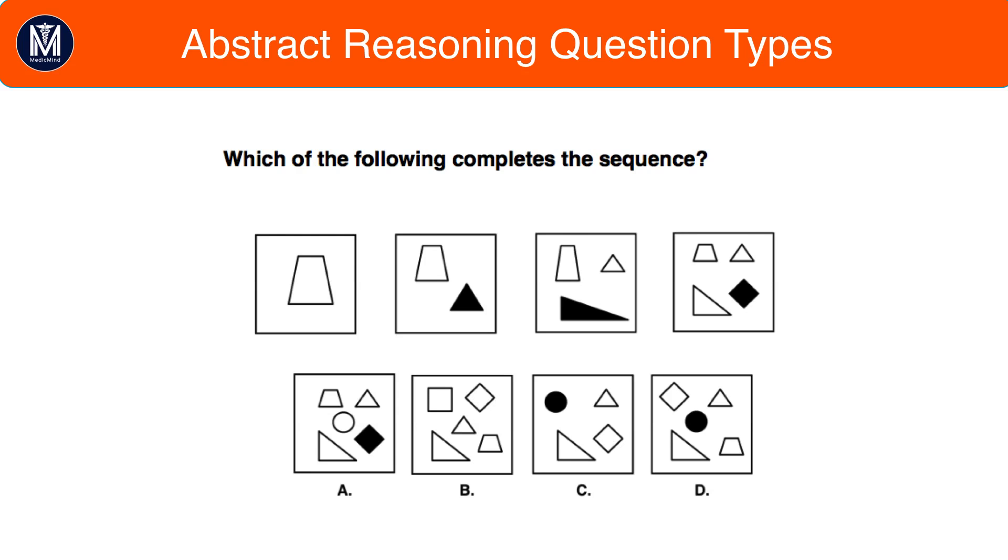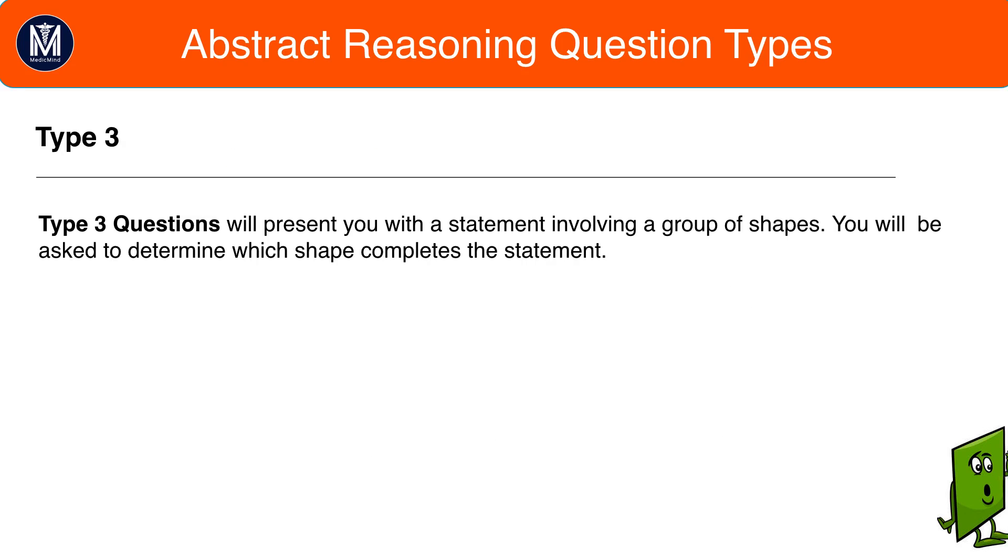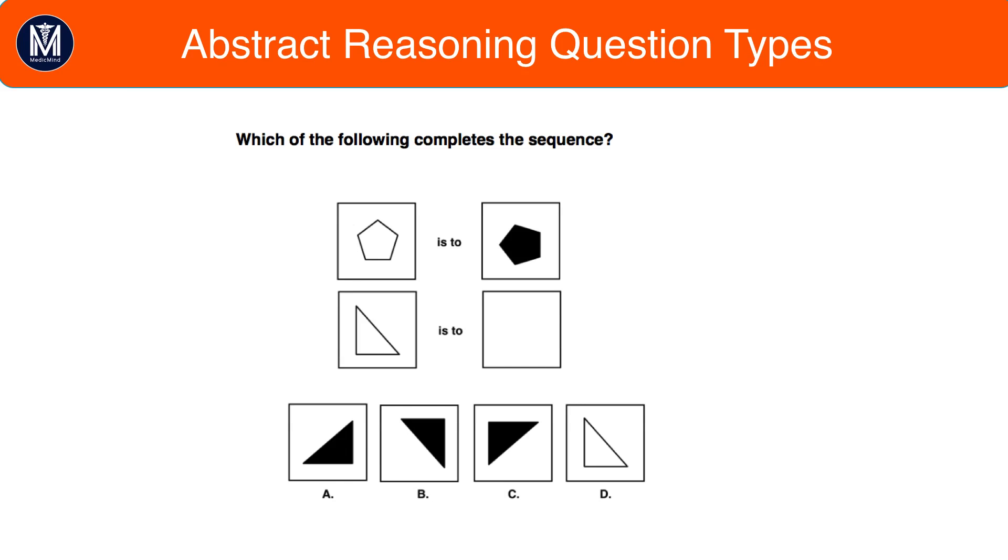Type 3 questions. In type 3 questions, you get pairs. You'll have one box paired to another box, and they'll ask you to pair a third box to one of the test shapes to find the fourth box. This is to this, as this is to what? Box 1 is to box 2, as box 3 is to what? Have a go at this particular question.